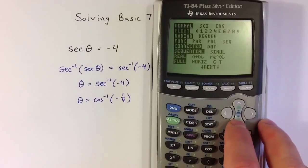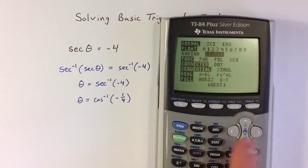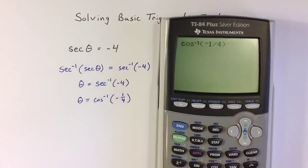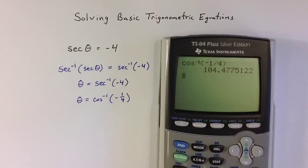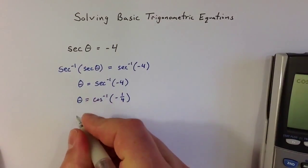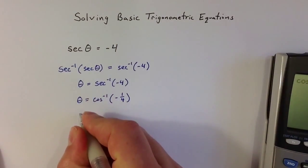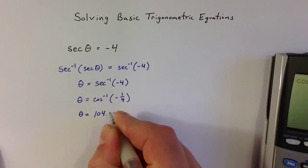Let me check whether I'm in degrees or radians — I want an answer in terms of degrees. We could equally well find an answer in radians. In degrees I get 104 — so one solution to this equation is the angle theta equal to roughly 104.5 degrees.